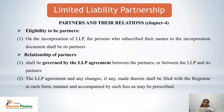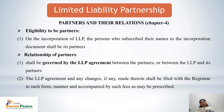Chapter 4 covers partners and their relations. Any person who has subscribed their name to the incorporation document of LLP can be a partner. The relationship of partners would be governed by the LLP agreement between the partners or between the LLP and its partners. Any change in the LLP agreement must be conveyed to the Registrar in the required form with prescribed fees.